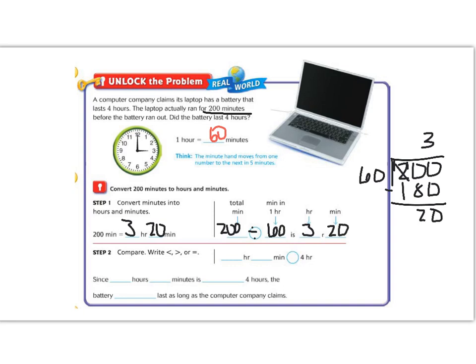So now that we know how long it actually lasted, let's see what the company says. The company says that it should last for 4 hours. Well, we know that 3 hours and 20 minutes is smaller than 4 hours. So since 3 hours and 20 minutes is less than 4 hours, the battery did not last as long as the computer company said. So today's lesson is going to be all about time and converting time. Let's continue on.